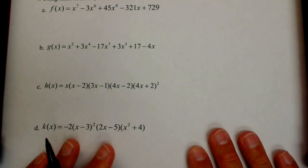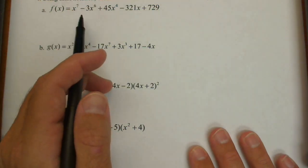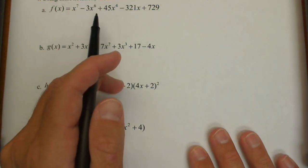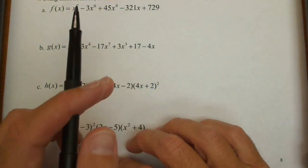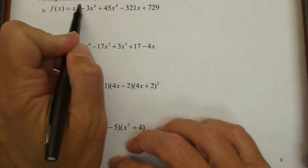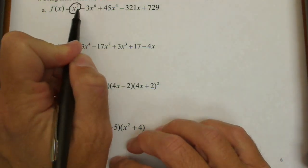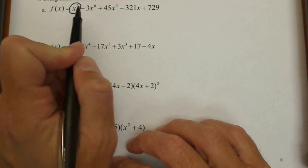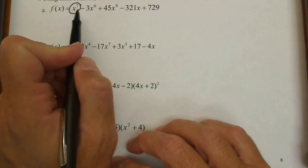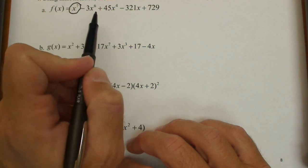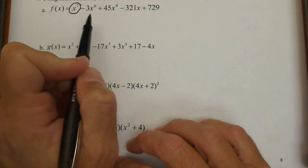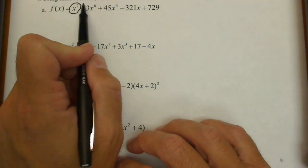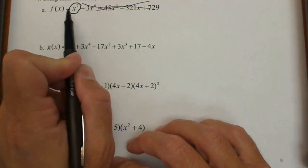For polynomial A: x to the seventh minus 3x to the sixth plus 45x to the fourth minus 321x plus 729. There's a lot going on here, but a polynomial is dominated by its leading term — the term associated with its highest exponent. This is a degree seven polynomial with an odd degree, so both ends are going to go in opposite directions, just like x cubed or x to the fifth. I don't even worry about the rest; I know it's going to behave like x to the seventh.